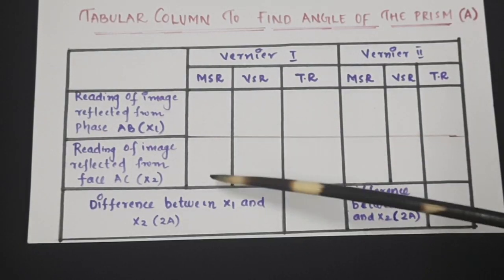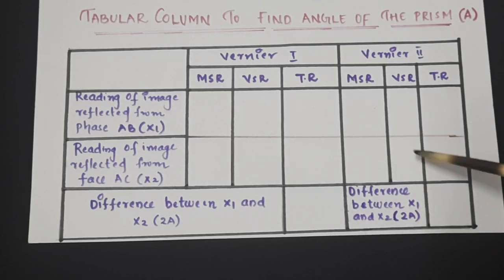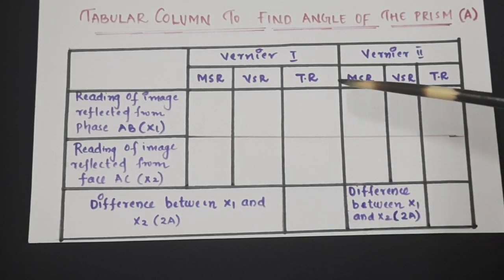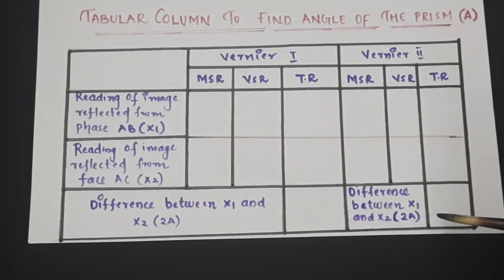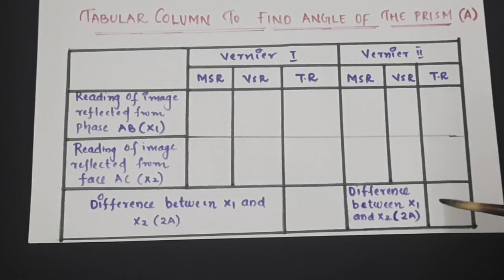Readings of the two reflected rays will be entered over here and the difference between these two telescopic readings will give us 2A, double the angle of the prism.